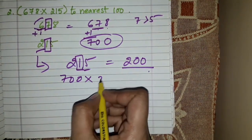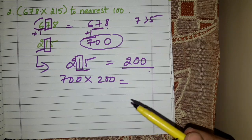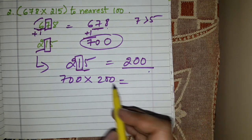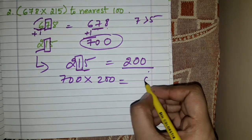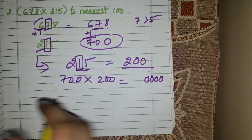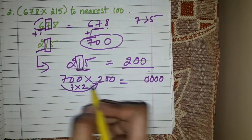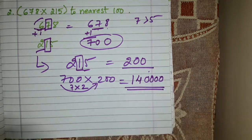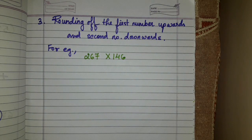So the two numbers are 700 and 200. We do direct multiplication: count the zeros at the end of both numbers — 2 here and 2 here, so 2 plus 2 gives 4 zeros. Then 7 into 2 is 14, so the answer is 140000.